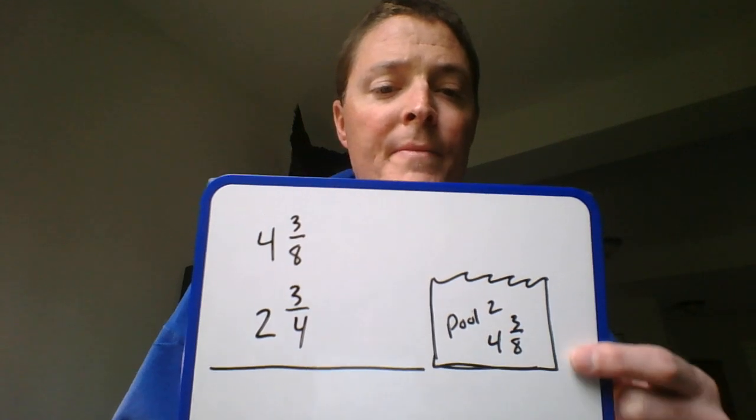Okay, I'm going to draw a picture. And you guys know from class that Mr. Cox is not an artist, so bear with me on this. This is going to be pool two, which we said was four and three-eighths. There's my picture of the pool.